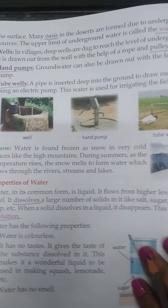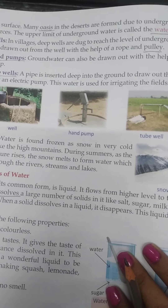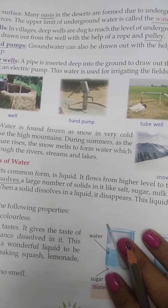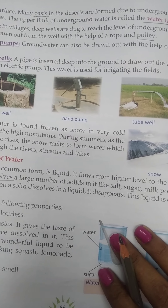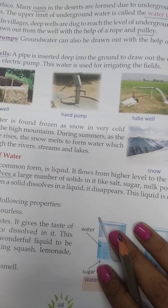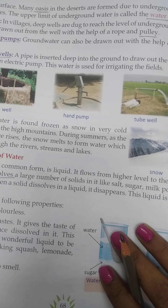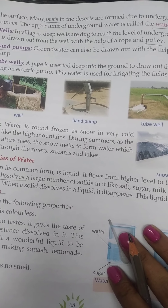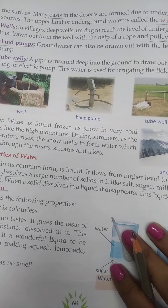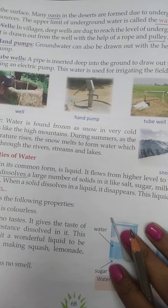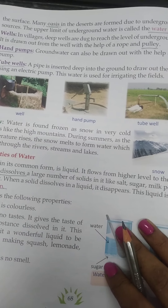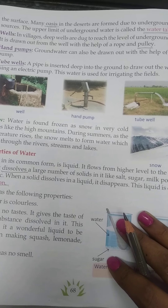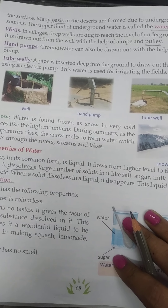Many oases exist in the desert. Oasis is a new word for you. An oasis is a place found in the desert area where water is available and plants can grow. That place is known as an oasis. Many oases in the desert are formed due to underground water sources.